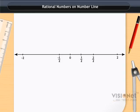Similarly, 2/2 (that is 1) and -2/2 (that is -1) are also at equal distance from 0. So 1/2 and -1/2 are rational numbers on a number line.